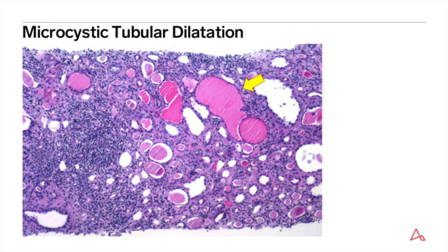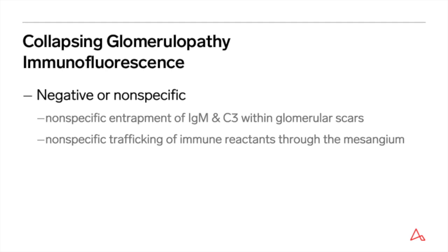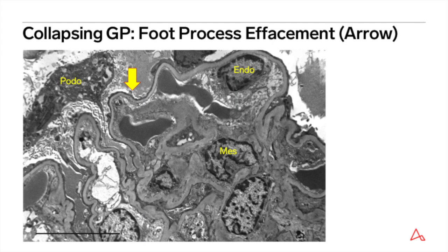These changes can occur early on in the disease. CG is not an immune-complex-mediated disease. Accordingly, immunofluorescence microscopy shows either negative or nonspecific staining. Nonspecific staining may manifest as nonspecific entrapment of IgM and C3 within glomerular scars, or as nonspecific trafficking of immune reactants through the mesangium. CG is classified as a podocytopathy and therefore expected to exhibit extensive foot process effacement by electron microscopy. However, Helmut Rennke's group at the Brigham reported that only 57% of HIV-associated collapsing glomerulopathy and only 38% of non-HIV cases showed extensive foot process effacement.